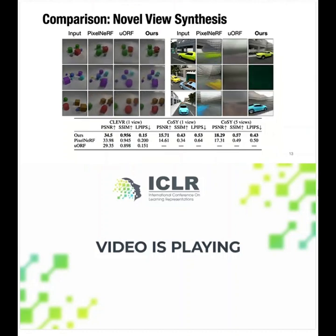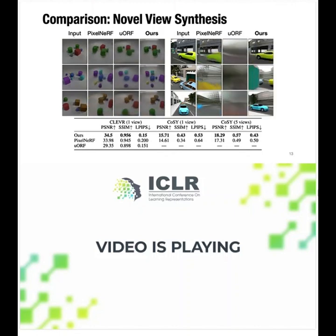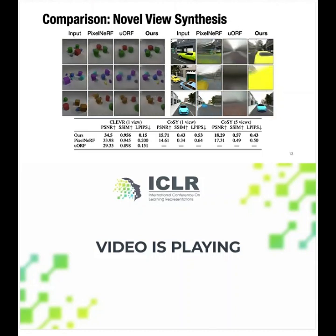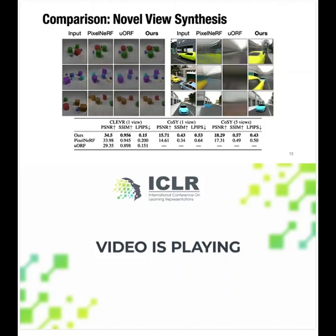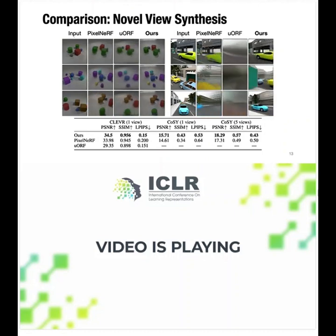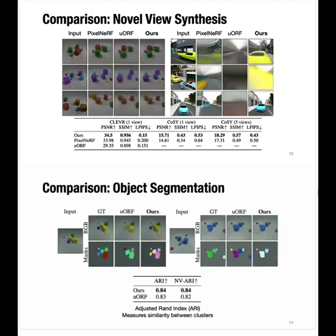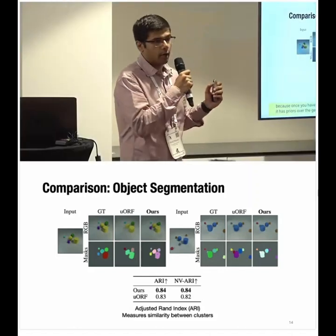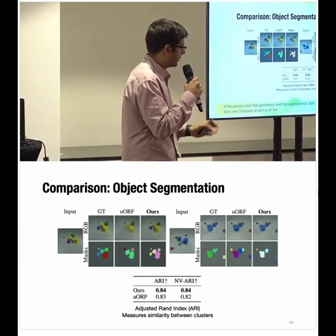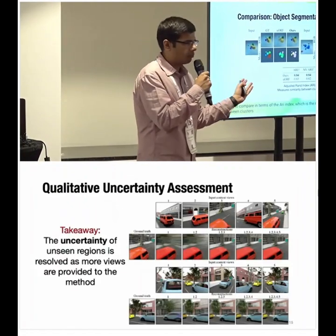Compared to PixelNeRF and URF (Unsupervised Object Radiance Fields) on novel view synthesis, our method performs better — particularly for cars, which appear much clearer. This is largely because the persistent grid allows the 2D CNN to better inpaint using priors over geometry and appearance. For object segmentation using the ARI metric, we are on par with URF.